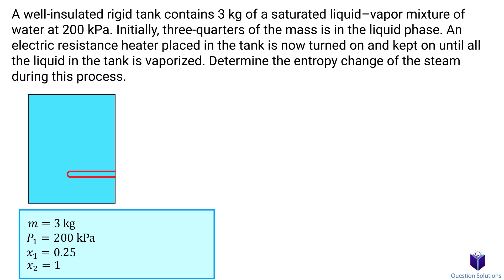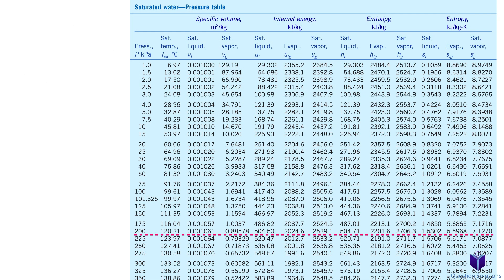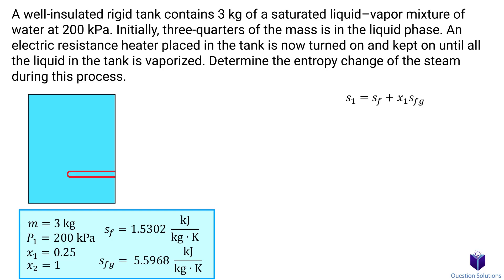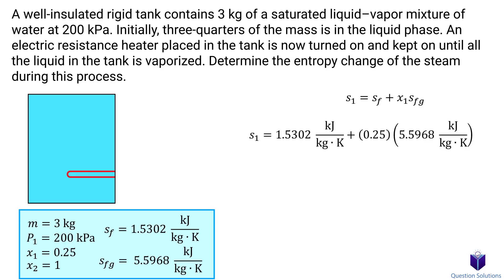We can start by finding the entropy values of this mixture at the initial state using this equation. That means we need the saturated liquid entropy and the evaporation entropy. Let's open up a pressure table and find these values at 200 kPa. We can plug these values into our equation to solve for the entropy at the initial state.